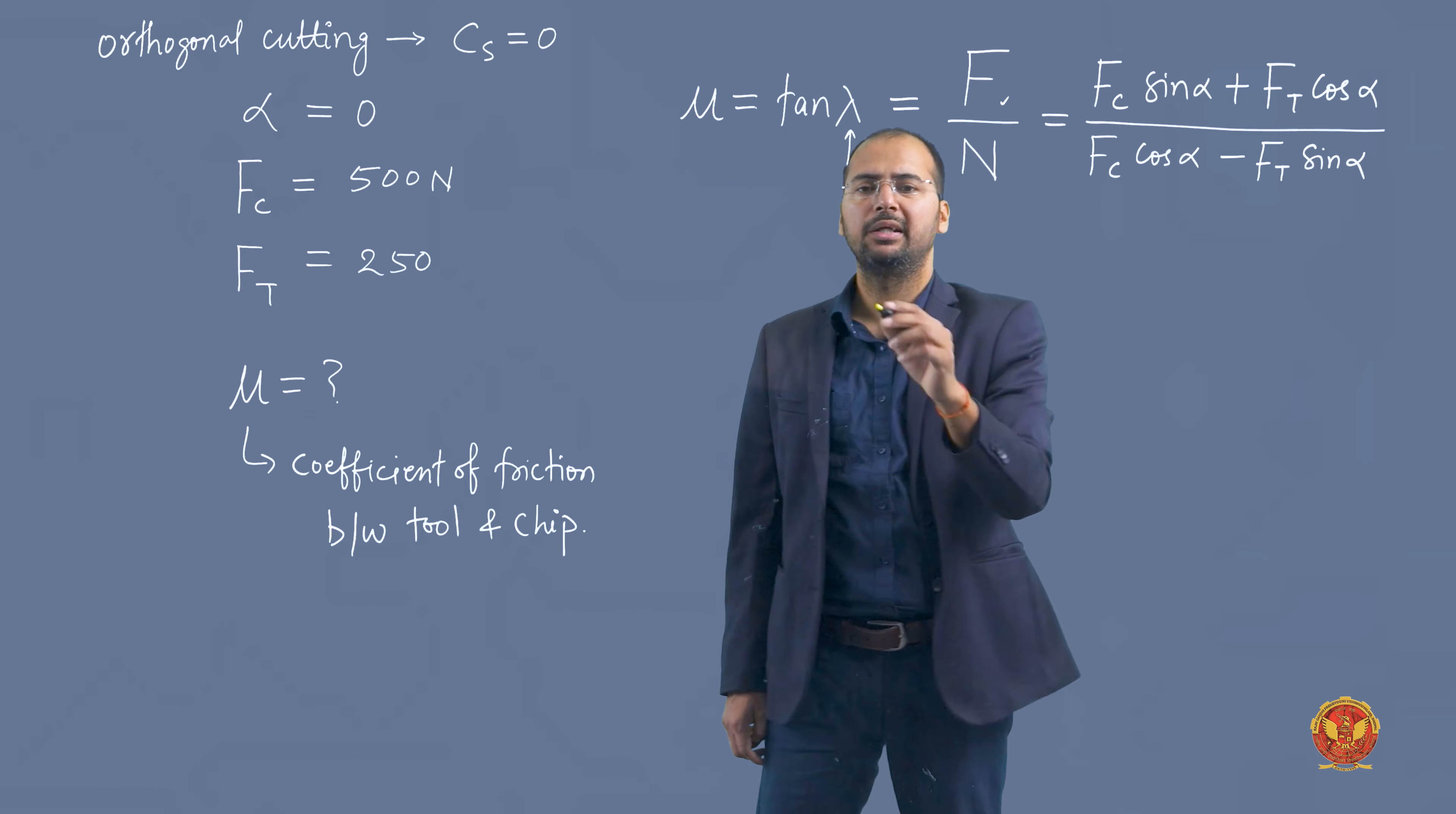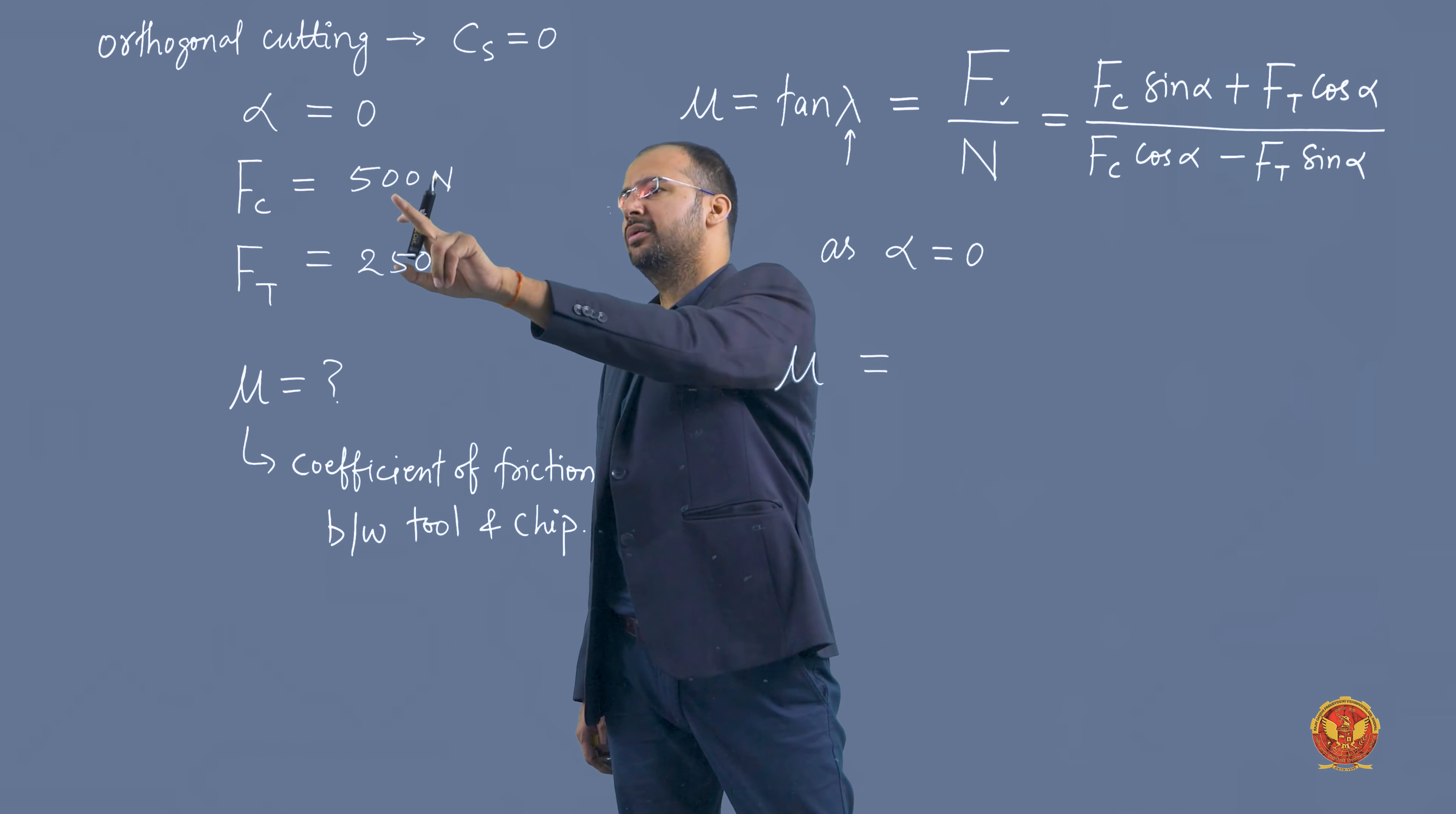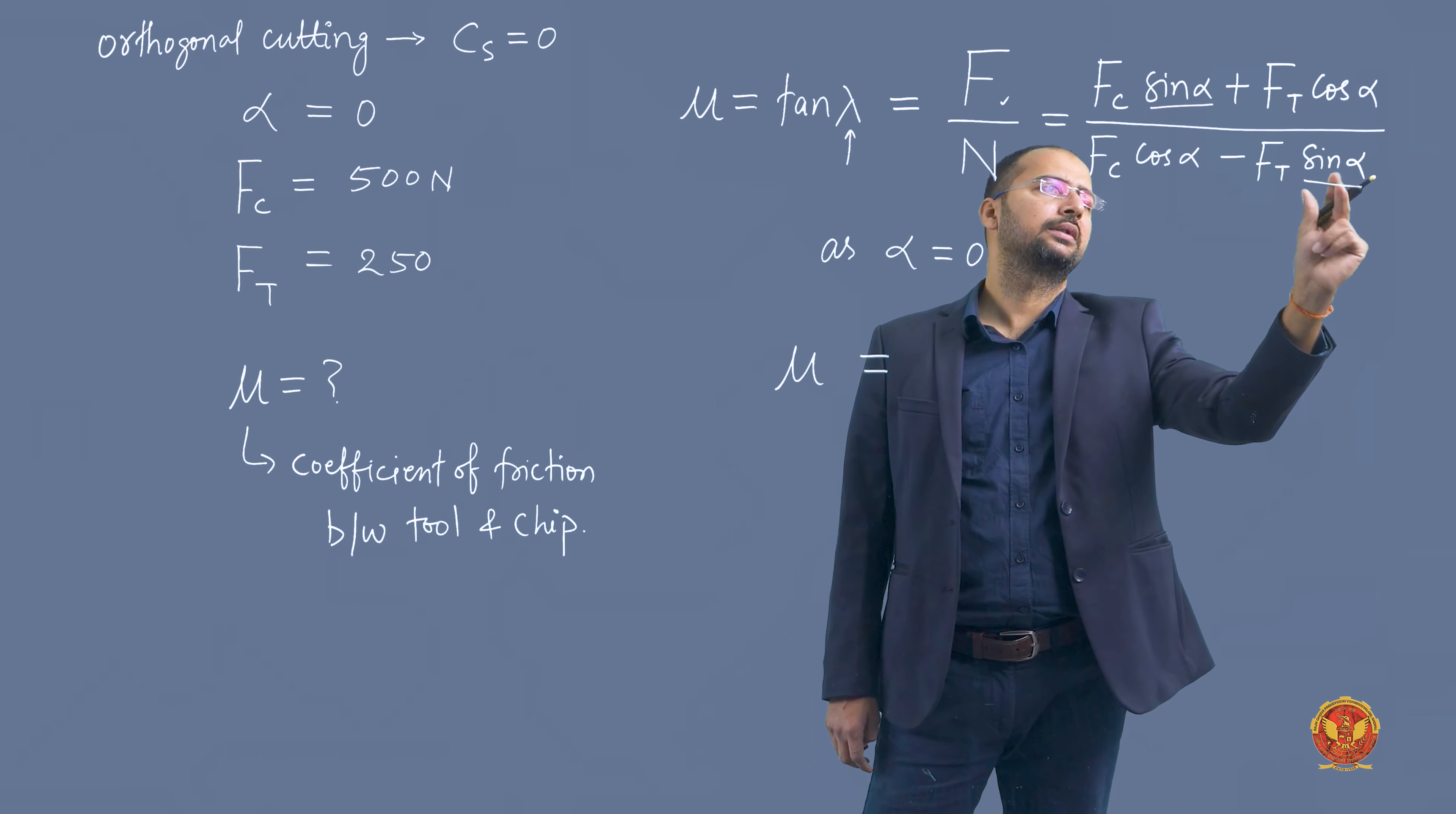Let's solve this. Alpha is given in the question as zero, so we can very easily find out the value of mu. Mu equals the ratio of these forces. Fc is 500 Newton and Ft is 250 Newton, both given in the question. First, we will put alpha's value. When alpha is zero, sin zero becomes zero, and sin zero becomes zero.